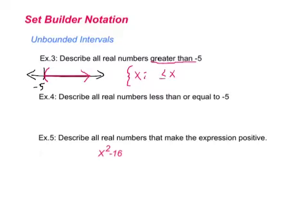That soft bracket is the same idea as an open circle in a previous class. To write this in set builder notation: the set of all x's such that x is greater than negative 5, and x is an element of the reals.